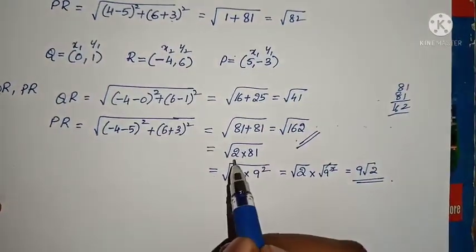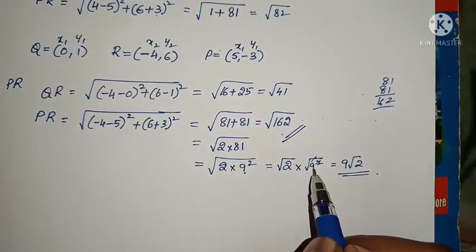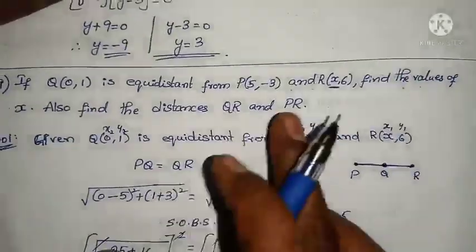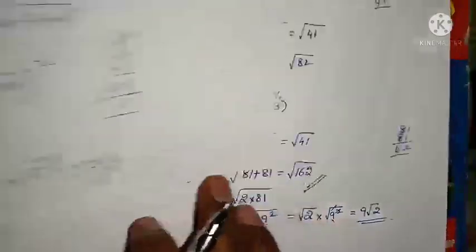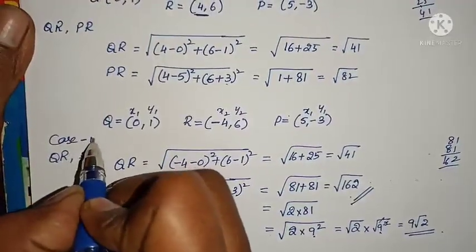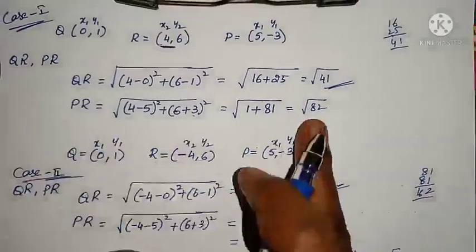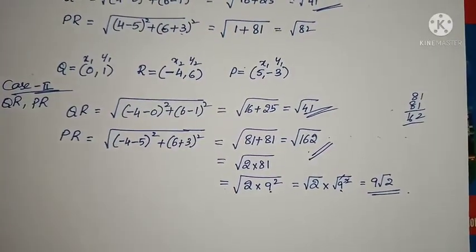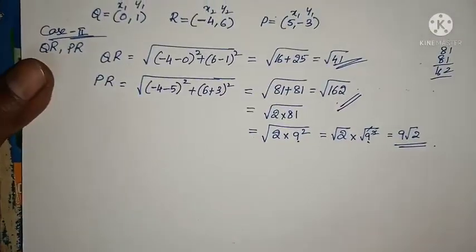In your textbook you have 9 root 2 as your answer. How we have done: Q is equidistant from P and R, so PQ equals QR. Solving gave x equals plus 4 and minus 4. In case 1 I took x equals 4 and in case 2 x equals minus 4. QR values are both equal to root 41, but PR values are different — root 82 and 9 root 2. Only one formula used throughout: root of (x2 minus x1) whole square plus (y2 minus y1) whole square.